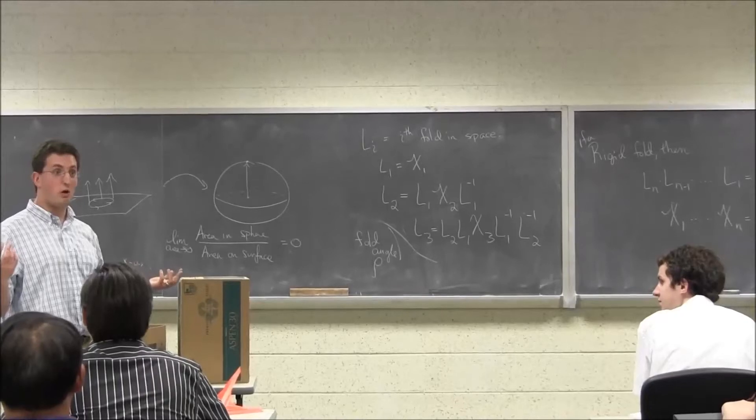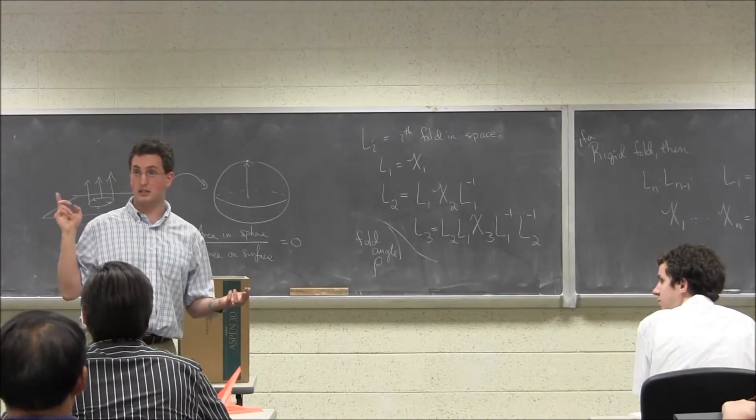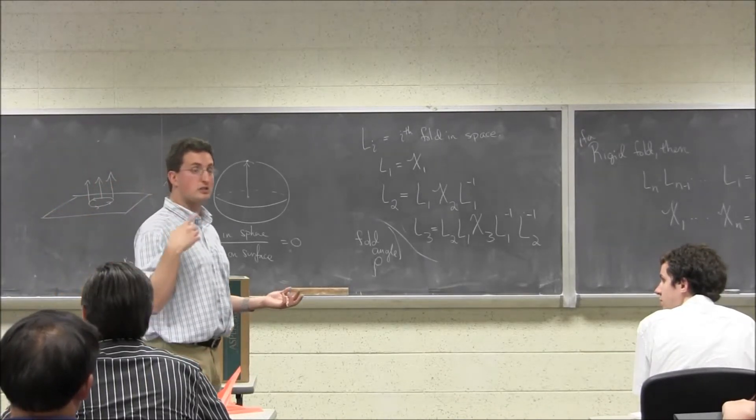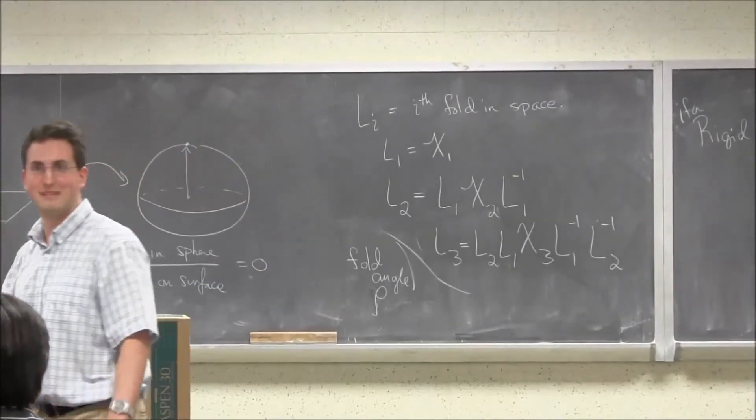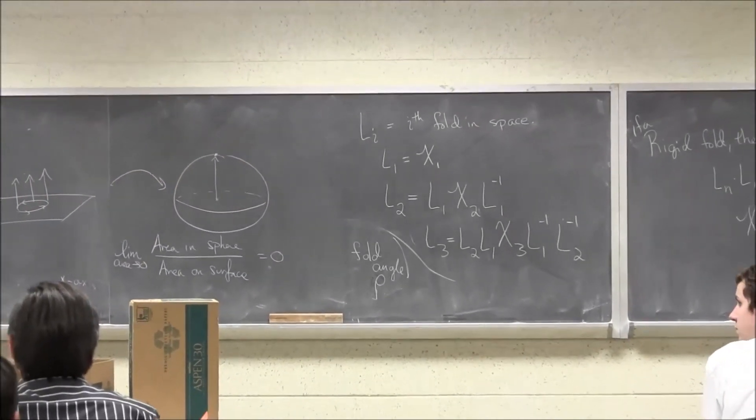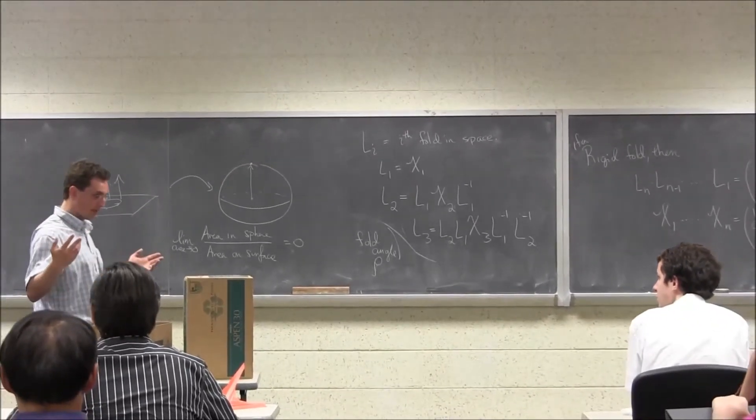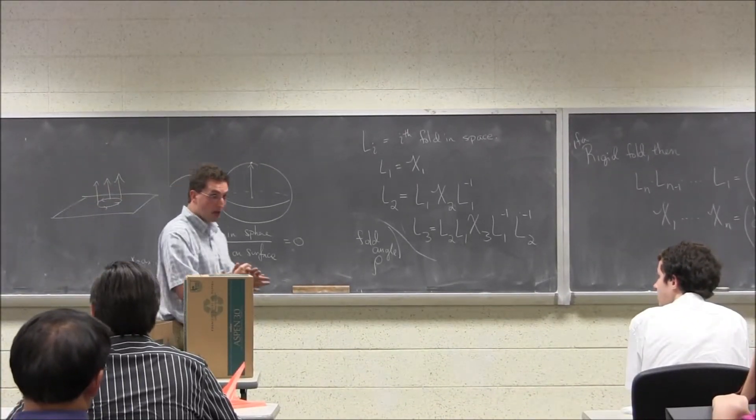And I'm gonna put one last tiny tidbit in for all the algebraicists in the room. So in origami, if you look at what's constructible, it's constructible by towers of degree two and degree three. That was applied for the algebraicists. Degree two and degree three extensions. That's the end of my talk.